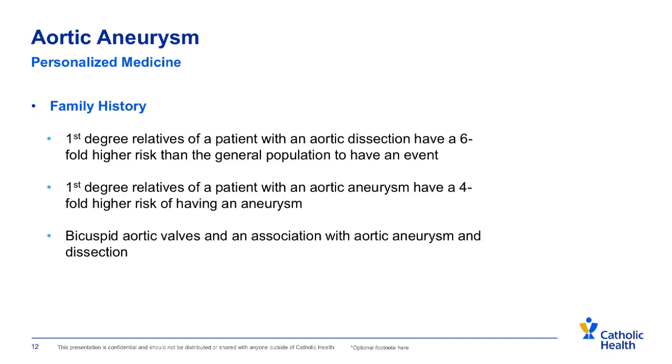Looking specifically at family history, patients who have first-degree relatives who have had an aortic dissection are at a six-fold higher risk to have an event themselves compared with the general population. Similarly, for patients with aneurysms, if there is a first-degree relative — a brother, sister, or parent — there is a four-fold higher risk of having an aneurysm. Aortic valve abnormalities, such as bicuspid aortic valves, often come along with aortic aneurysms and run in families.